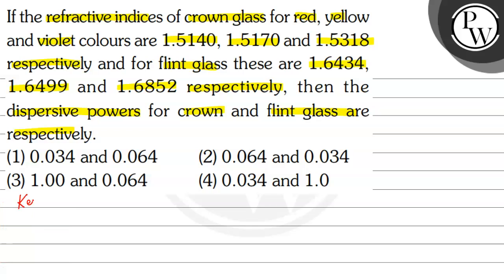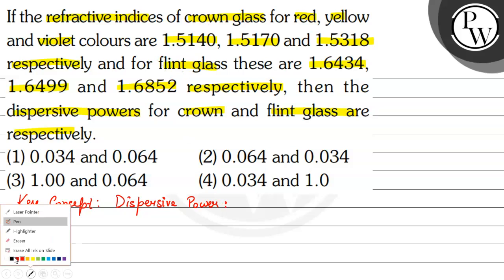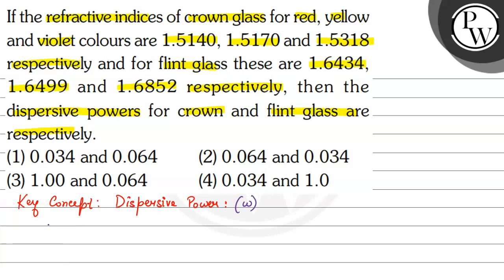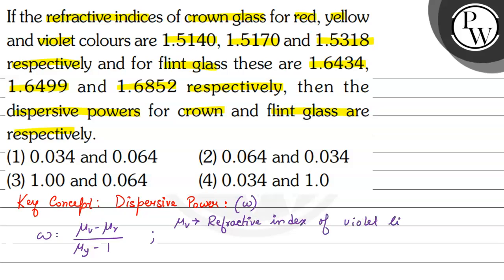Let's see the key concept. We will learn about the formula and how to find out the dispersive power. This formula is valid for anything — it is valid for crown glass as well as flint glass. We know that dispersive power is omega, so omega equals mu_v minus mu_r divided by mu_y minus 1, where mu_v is the refractive index for violet light, mu_r is the refractive index for red light, and mu_y is the refractive index for yellow light.